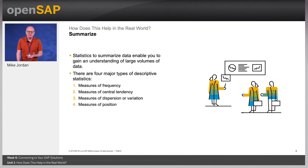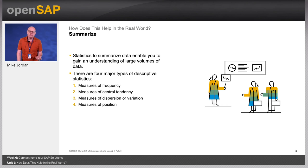Statistics to summarize data enable you to gain an understanding of large volumes of data. For example, you may want to calculate the average cost for students to go to university, or the average pay for men and women. Average pay can be skewed by those at the top; therefore, you may want to use the median, the middle value. Or you may also want to calculate the spread around the mean using standard deviation to understand the range of pay from top to bottom.